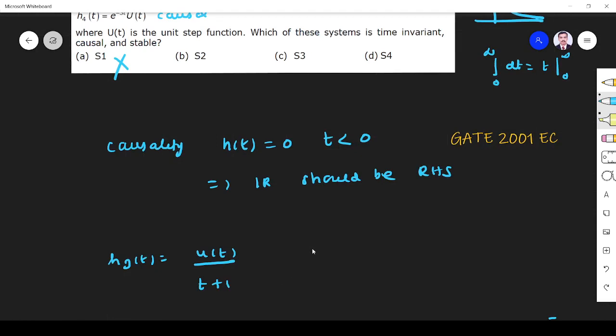U(t)/(t+1). So time invariant means what? If you shift in time, what will happen?